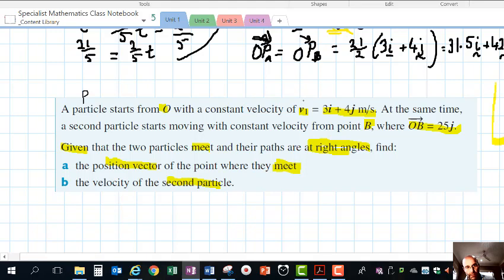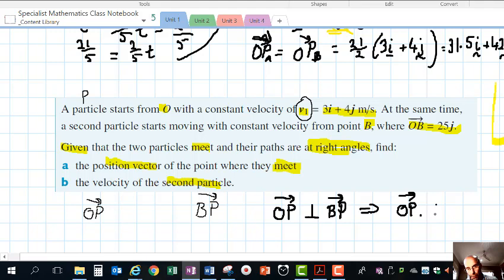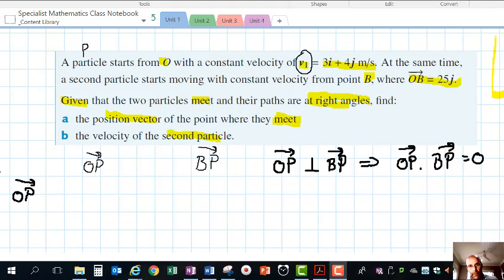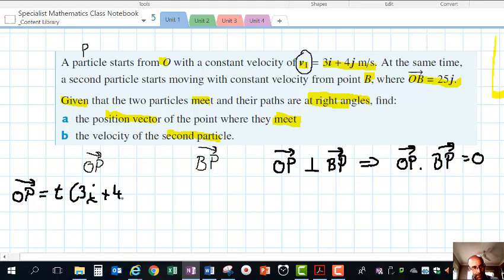I'm going to call the first particle P, with velocity V1 and position vector OP. For the other one, we'll have a path BP. They're at right angles to each other. If OP is perpendicular to BP, then we can deduce that vector OP dotted with vector BP equals zero, using the property of dot products, because cos(90°) gives us that.